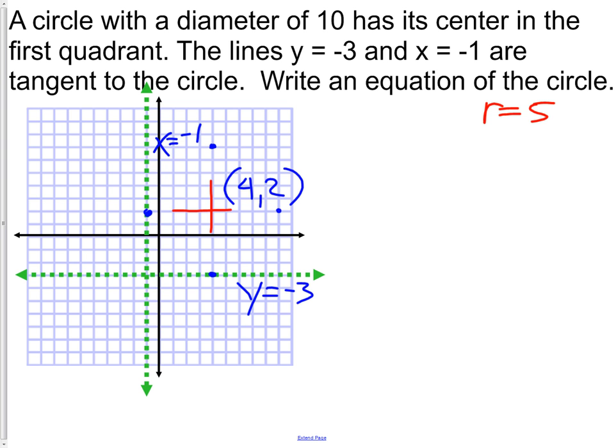Writing the equation is easy here. x minus 4 squared plus y minus 2 squared equals 25, which is simply radius squared.